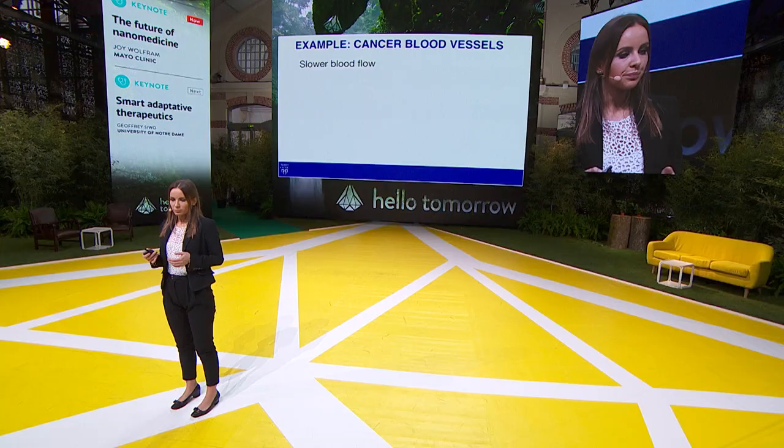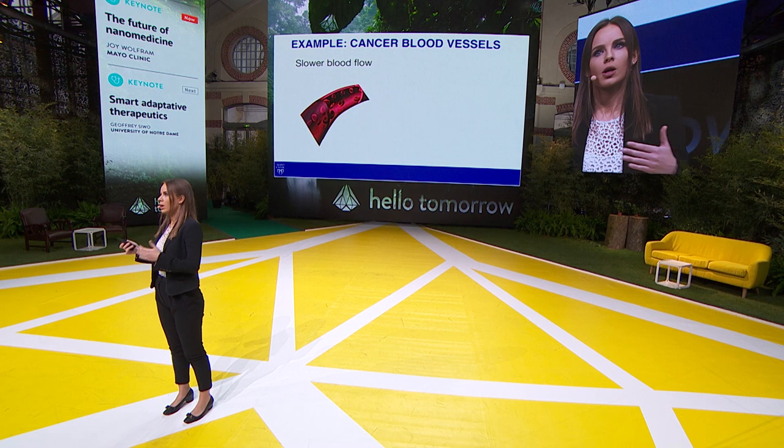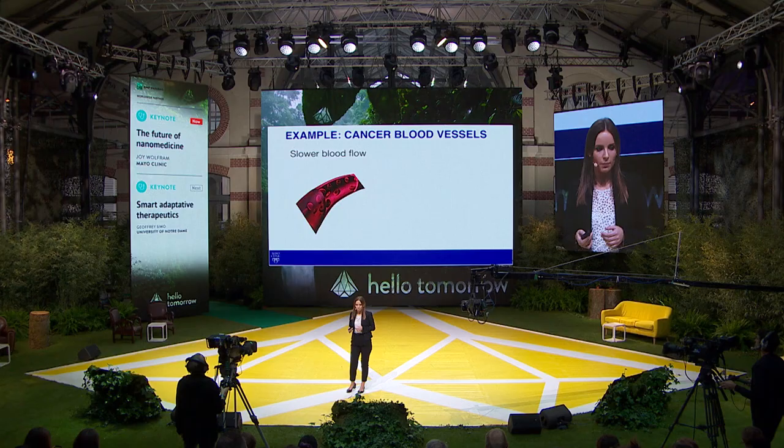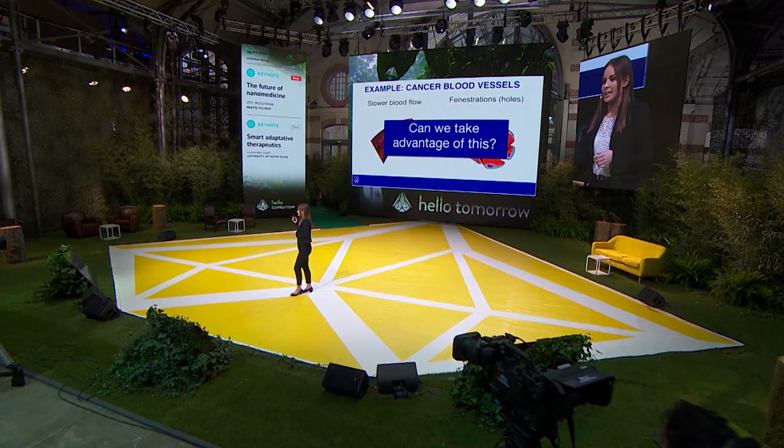The first difference is that cancer blood vessels have slower blood flow. As a tumor grows, it quickly recruits a vasculature network for nutrients and waste removal, but because this process is fast, it is disorganized and chaotic, causing slow blood flow in certain tumor regions. The second difference is that cancer blood vessels have fenestrations — holes — not present in normal vessels, because cancer blood vessels are immature and don't form a continuous barrier.